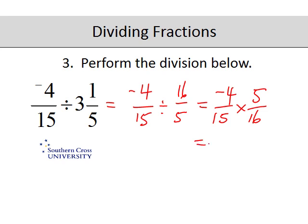This time we can see that we can do some simplifying or cancelling. 5 goes into 5 once and 5 goes into 15 three times. 4 goes into 16 four times and 4 goes into negative 4 negative 1 times. So negative 1 times 1 is negative 1 over 3 fours are 12.